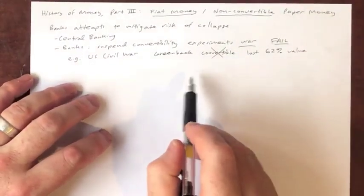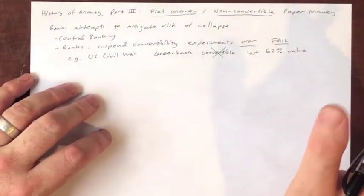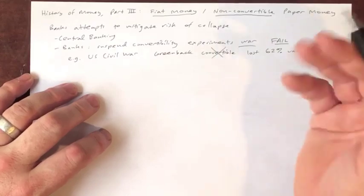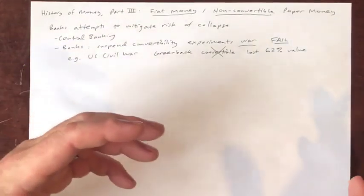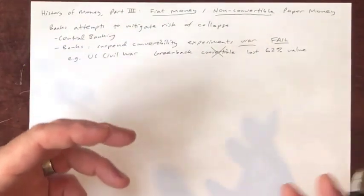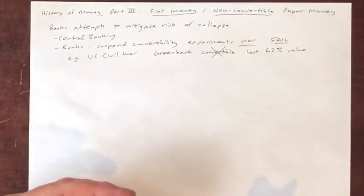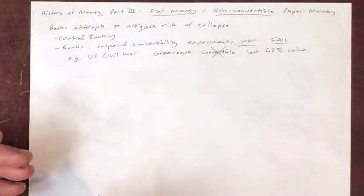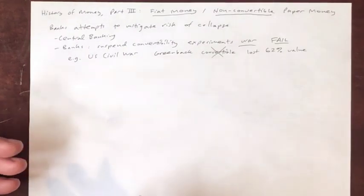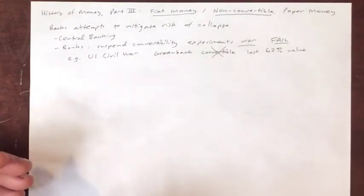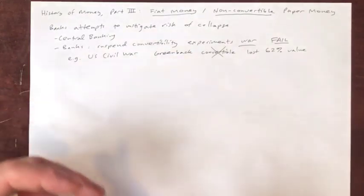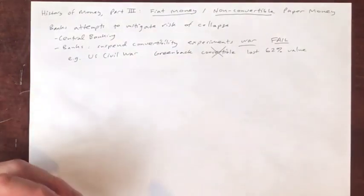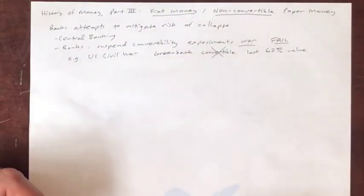The greenback only lasted a few years, because almost immediately, as the government paid for the war and ran up huge bills, they suspended convertibility. The greenback lost about 62% of its value within about a year and a half. These experiments with suspending convertibility universally end in failure — either the currency was destroyed, it was retired, or the experiment ended by going back to convertibility, back to some kind of gold or silver standard.